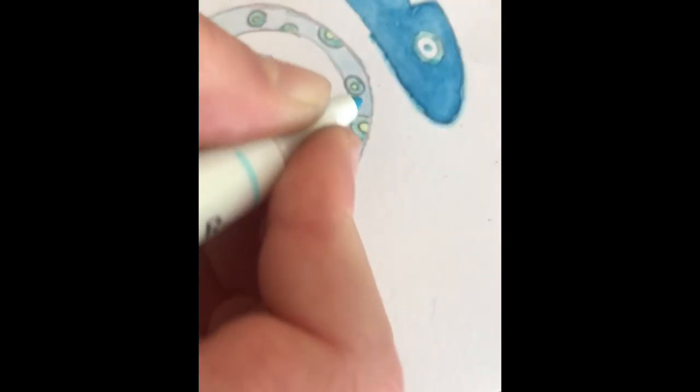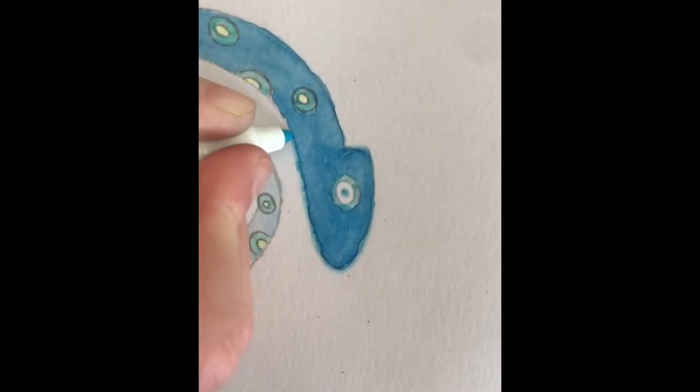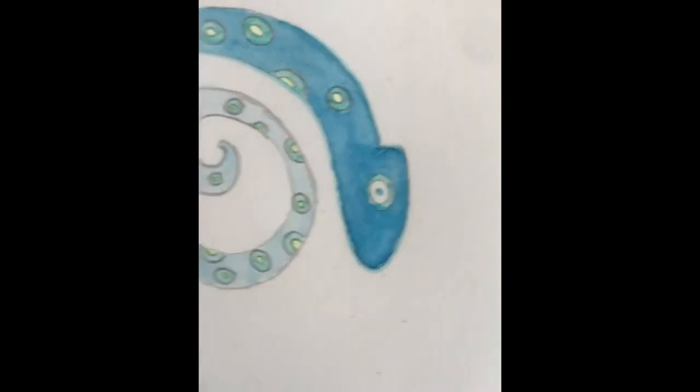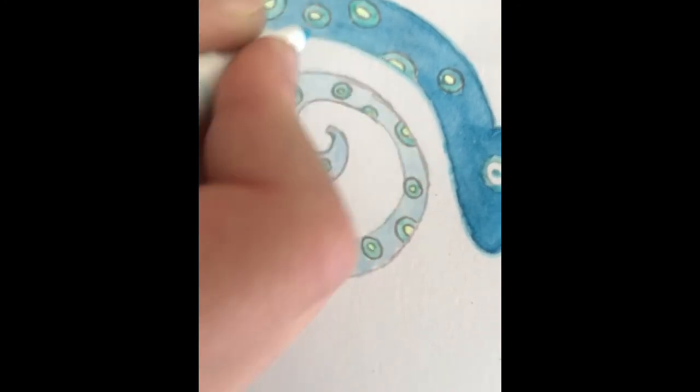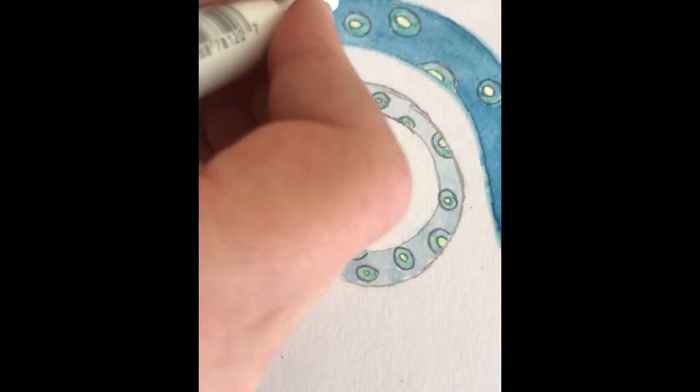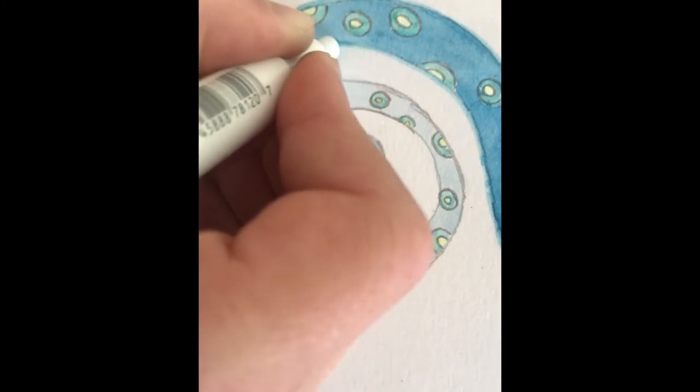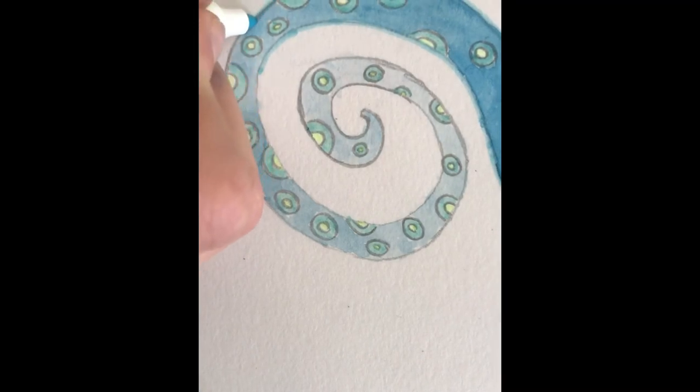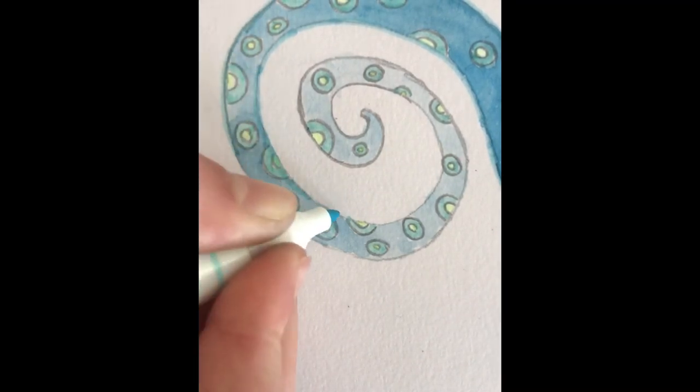And this is the last step. I'm just doing a quick outline in blue of my lizard just to give it some definition and so that it's really clear. And if there was a bit of paint that went outside the lines, I can have a thicker outline so that it doesn't go through and it doesn't go outside the lines. And once you've done that, you're finished.